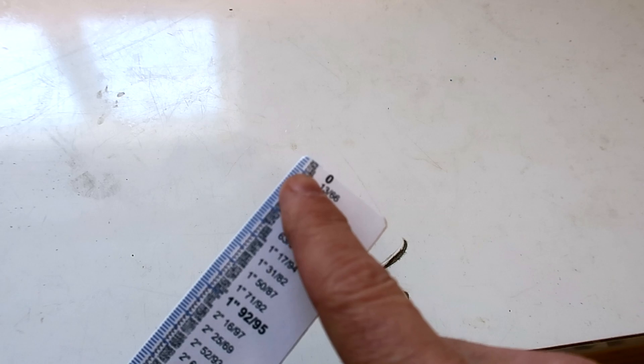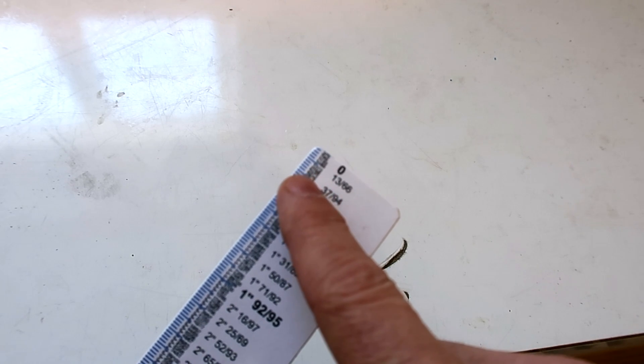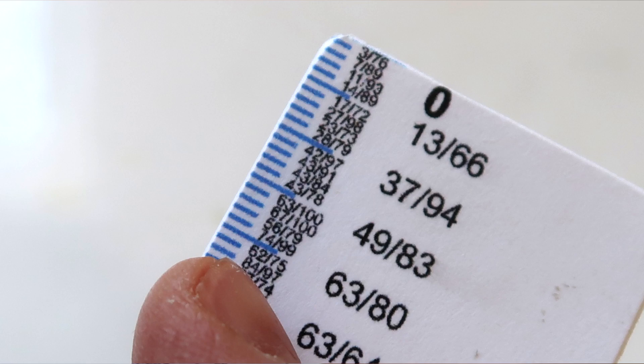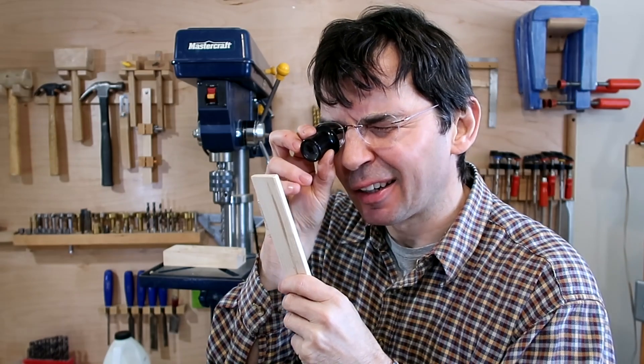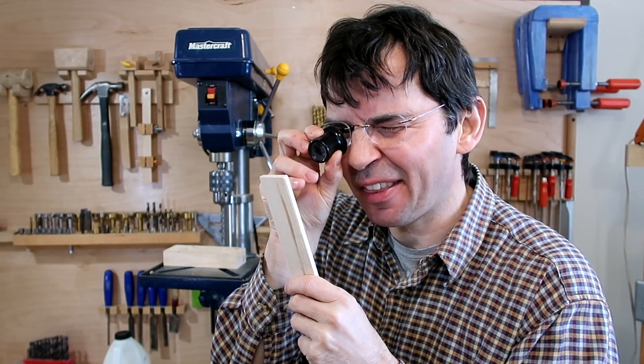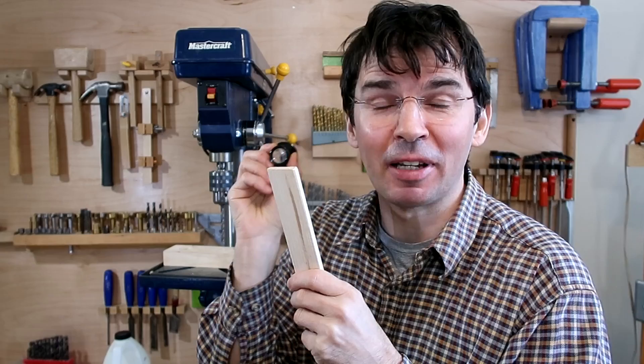And the fractions for all the millimeter sized units are also labeled although you may need a magnifying glass to read those. So one millimeter, two millimeter, three millimeters are 3/76th, 7/89th, and 11/93rd of an inch.